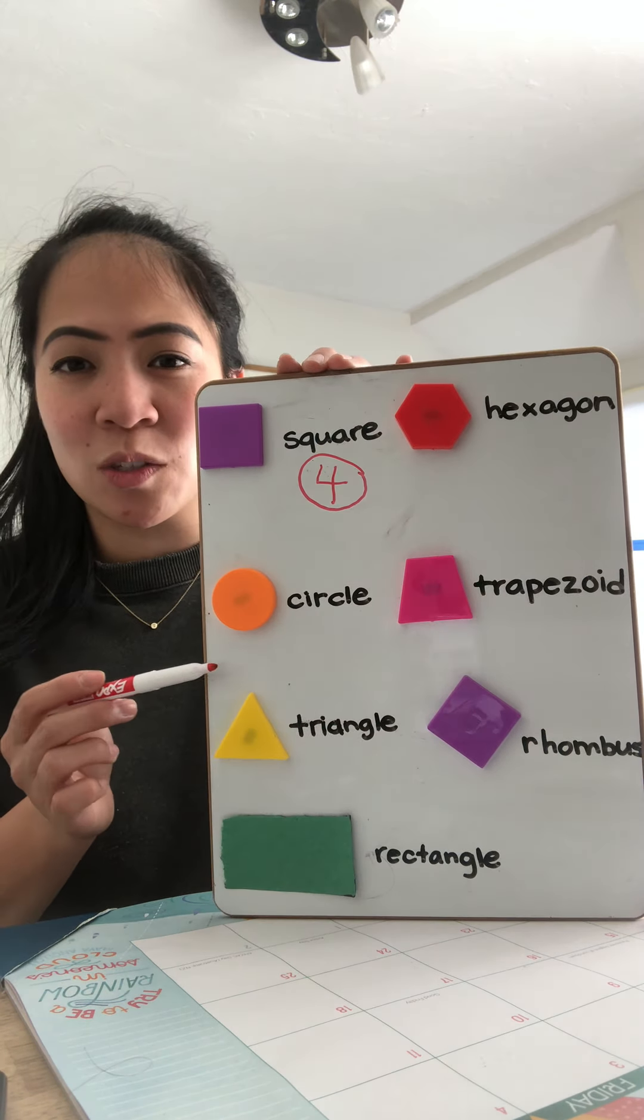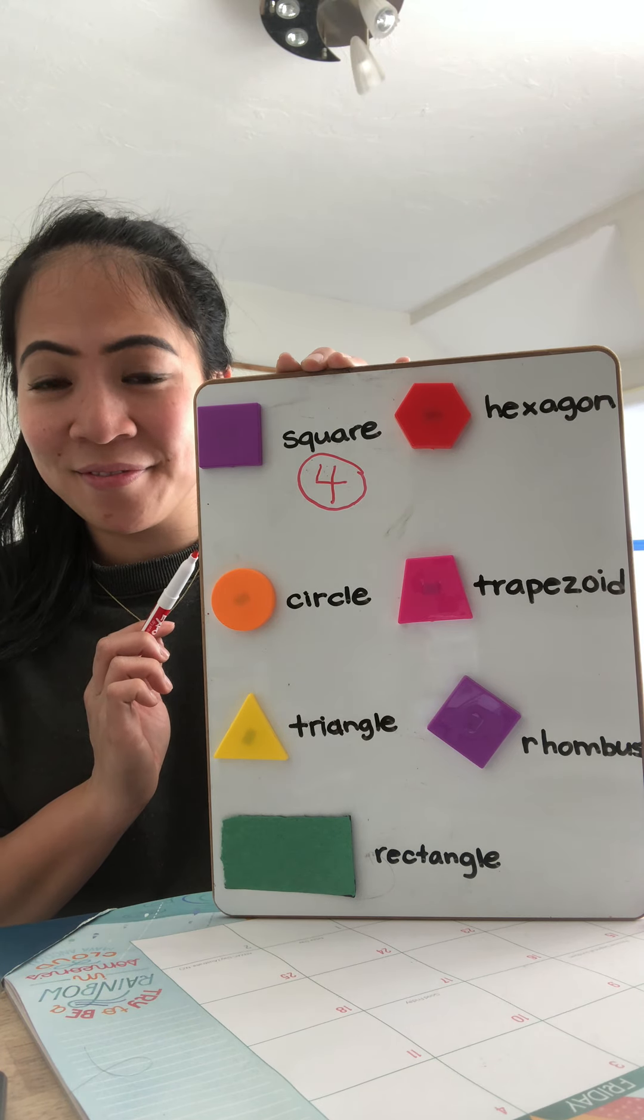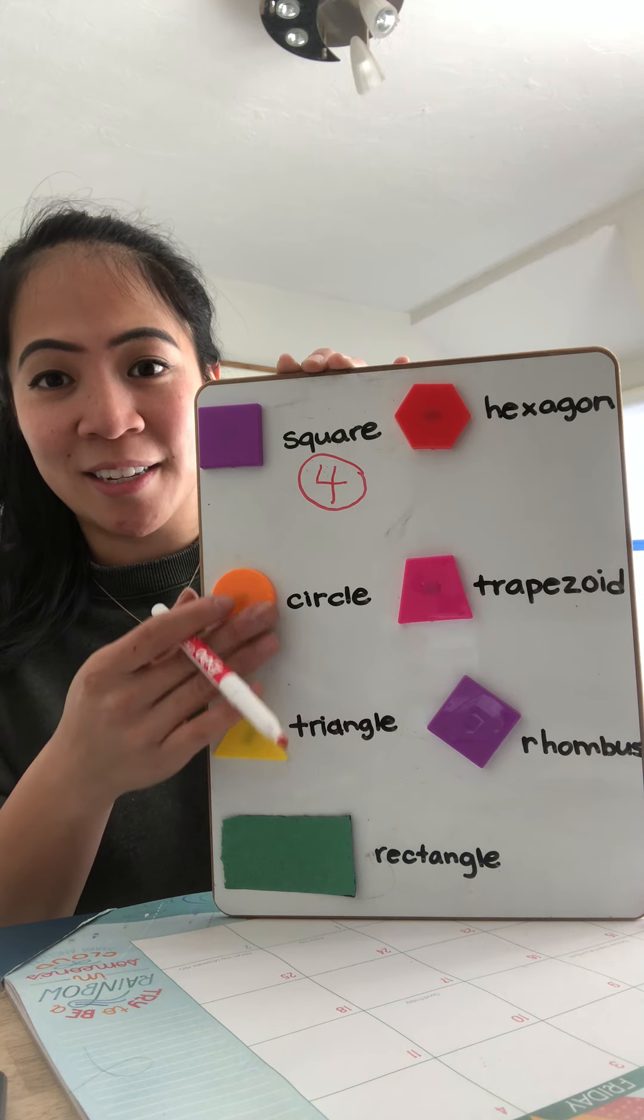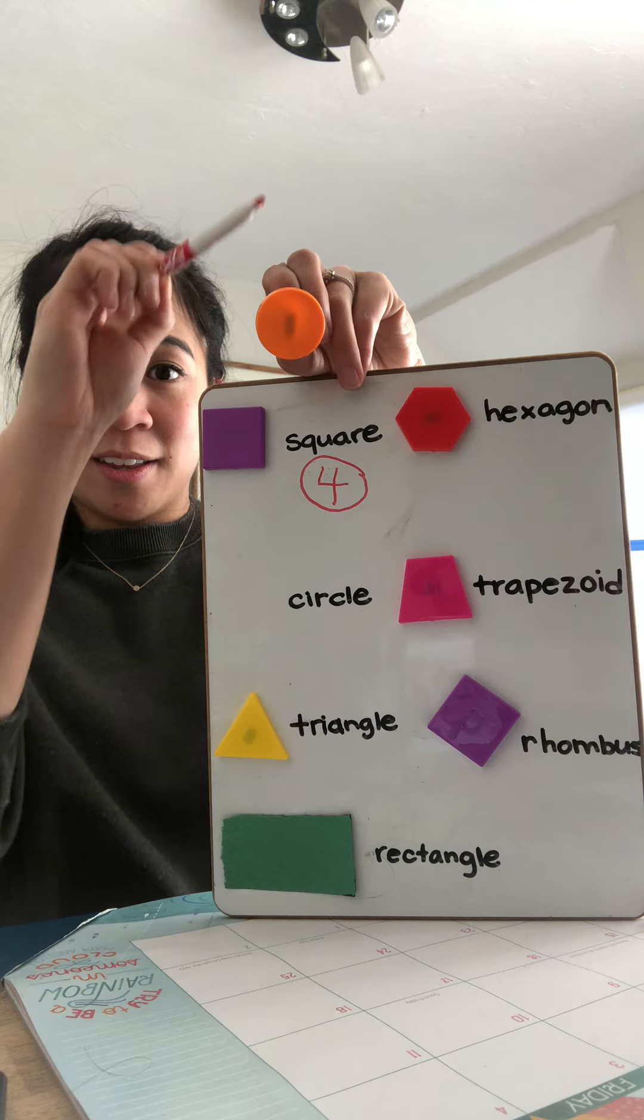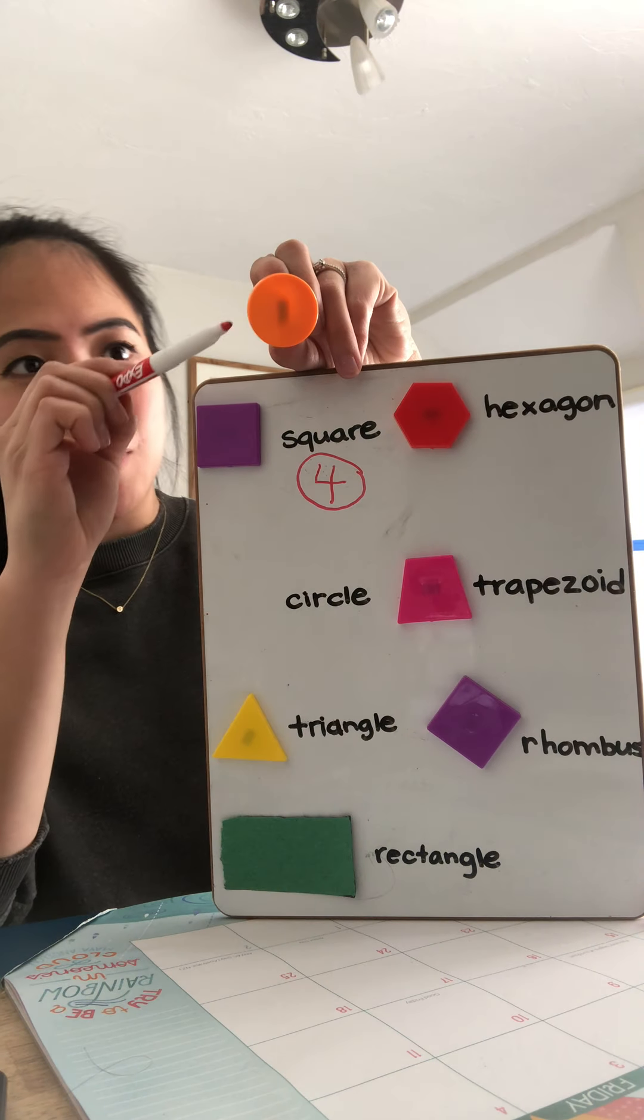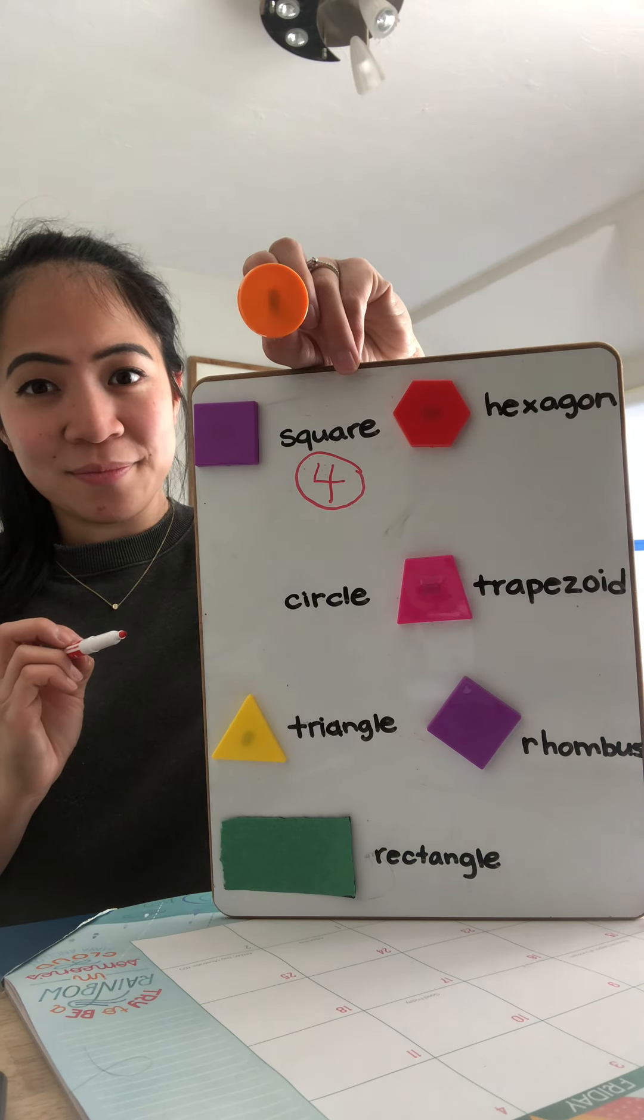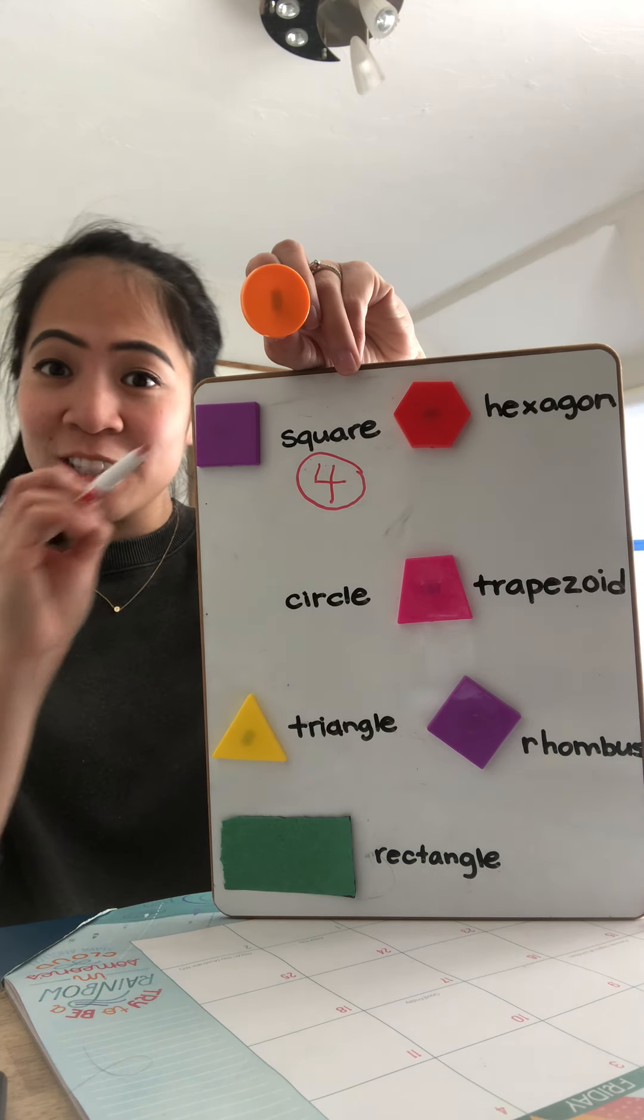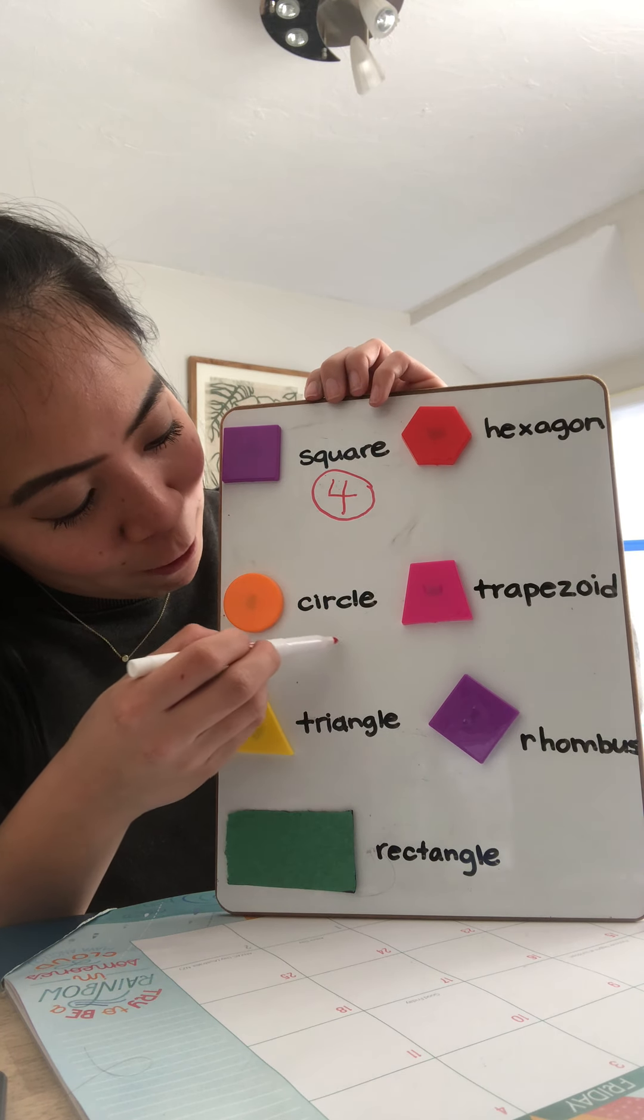Now, how many sides does a circle have? No sides. Okay? Now, the sides and shapes are very sharp. They have sharp sides. Now, do you guys see any sharp sides in a circle? No. It's just round. No sides. So we're going to do zero.